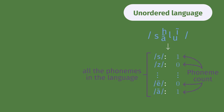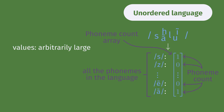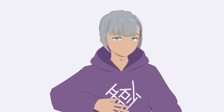Utterances in unordered languages can then be thought of as phoneme count arrays — arrays where each entry is the phoneme count of a different phoneme. This means the values can be arbitrarily large, while the length of the array is fixed, equal to the size of the phoneme inventory. But so far we still don't know if unordered languages are possible or not.